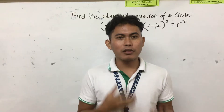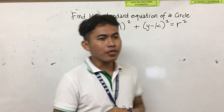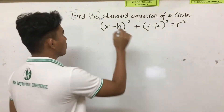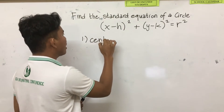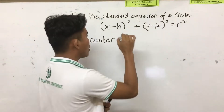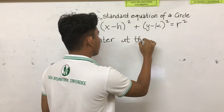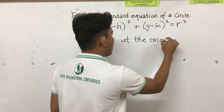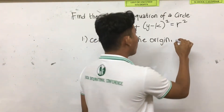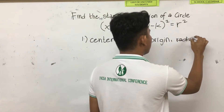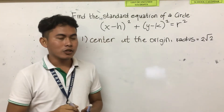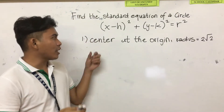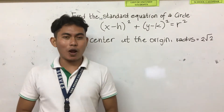Let's start with our first example. Our first example is very basic. The center is located at the origin, and our radius is equal to 2 square root of 2. Center at the origin, radius 2 square root of 2.